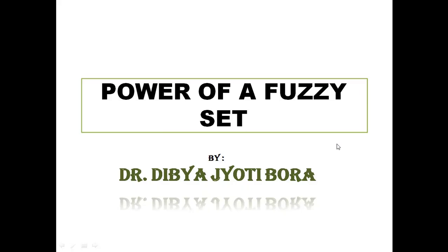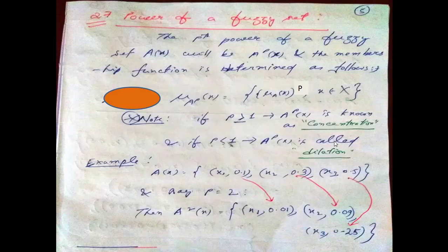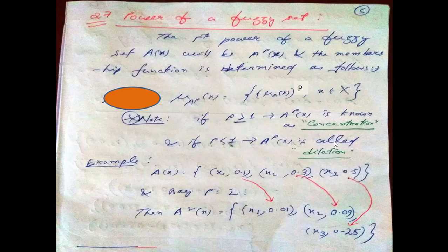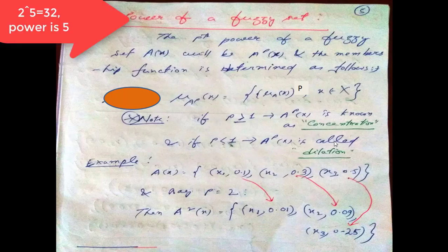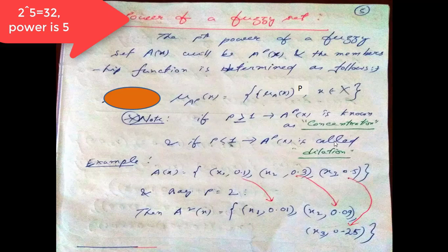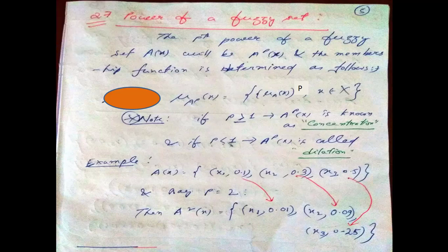Hello guys, today our topic is power of a fuzzy set and how to determine it. I'm Dr. Devorah and you will find my introduction in the description below. We generally mean power as 2 to the power 3, that is 8, or 2 to the power 5, that is 32, like that. Now how to determine the power of a fuzzy set?